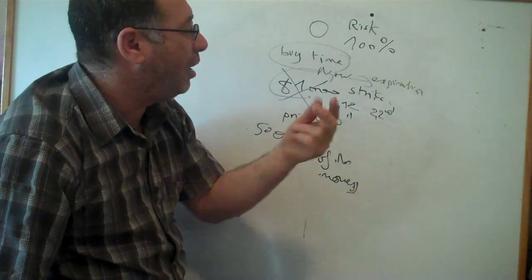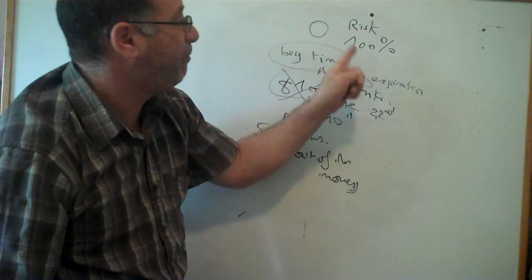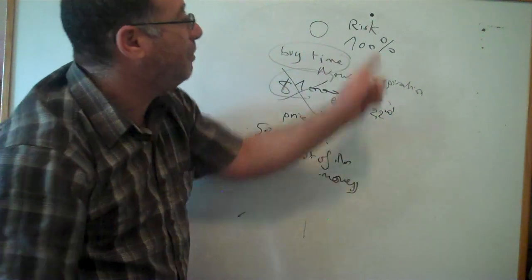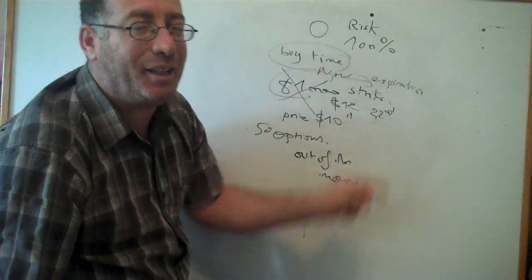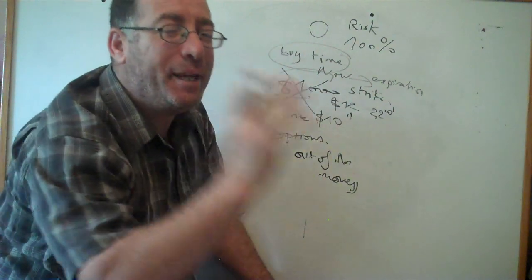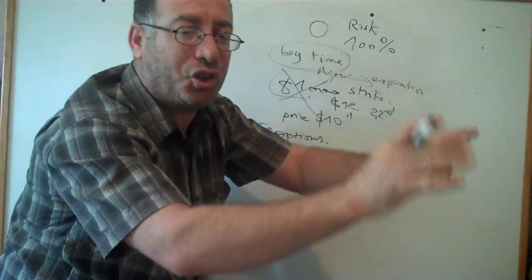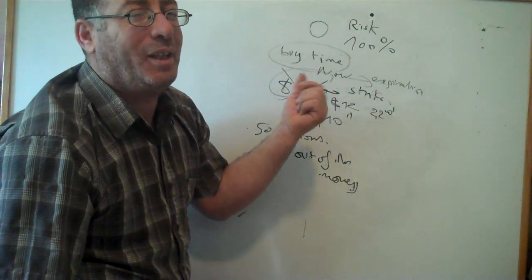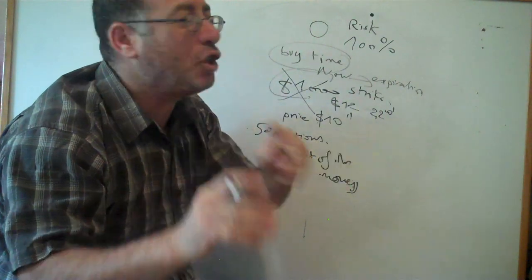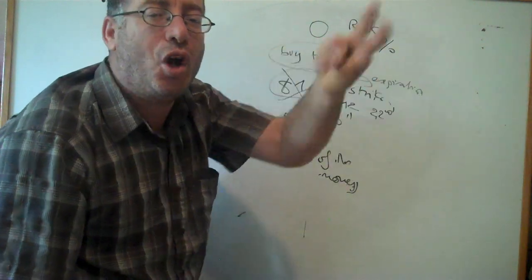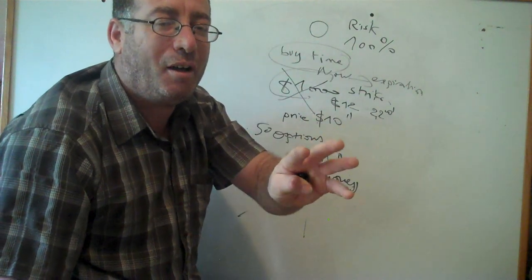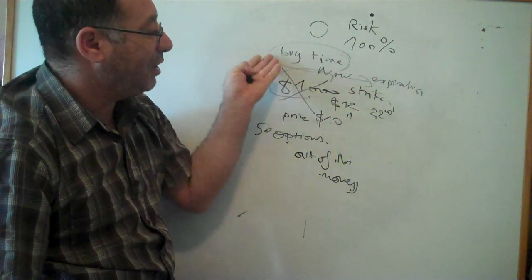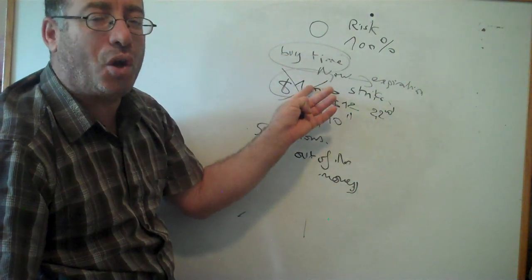I always tell you: think about the risk first. A professional thinks about the risk before he does a trade. A beginner does the trade and then doesn't know how much risk is in it. That is the only difference — it's not because the professional knows the future. A professional doesn't know the future. In this example, you buy the time, the time ends, the stock is at eleven, and you lose all your money.